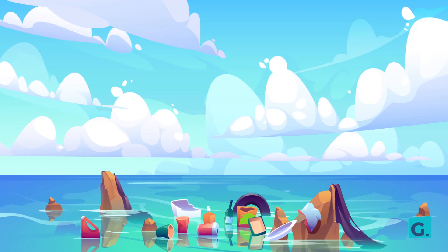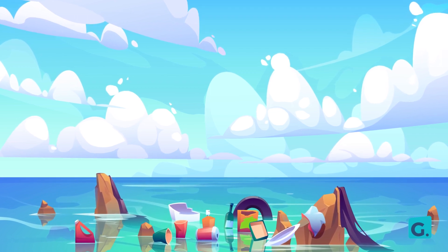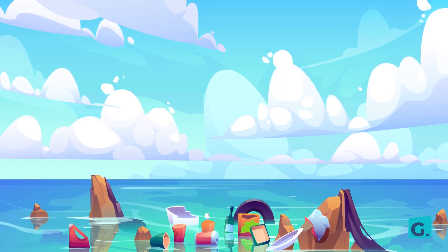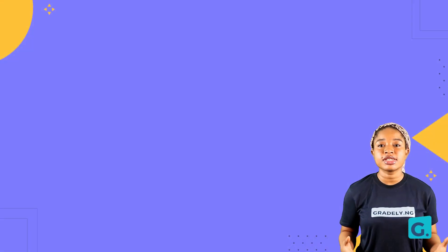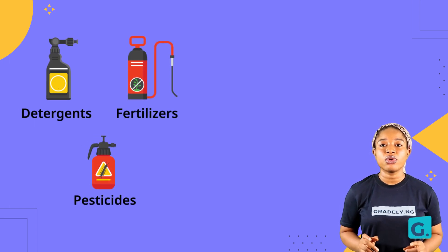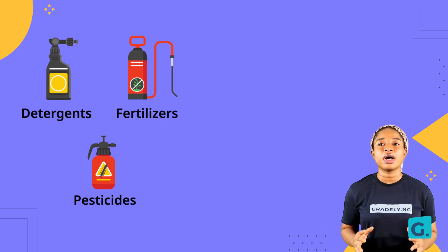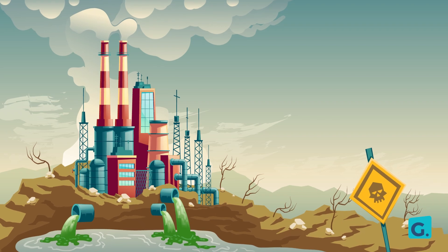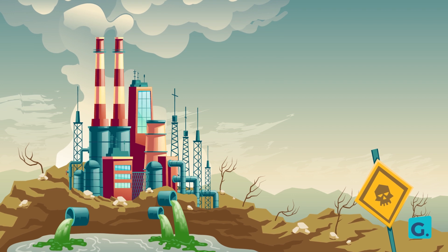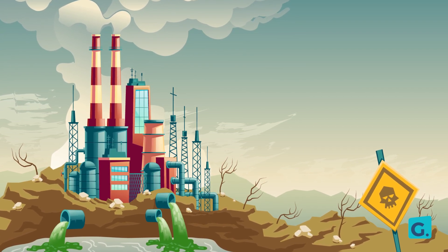Water pollution causes water to become inhabitable for water animals and plants. This is due to poisonous chemicals being introduced into the water. Chemicals like detergents, fertilizers and pesticides are non-biodegradable, which means they cannot be broken down into harmless compounds by living things. These chemicals are washed from the soil into the water and end up poisoning aquatic animals and also reduce the amount of dissolved oxygen in the water.